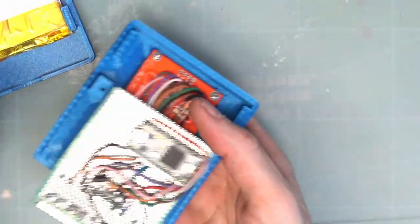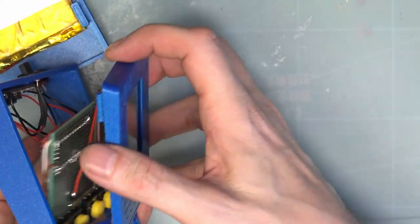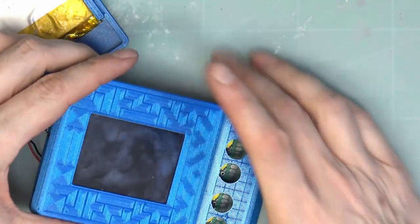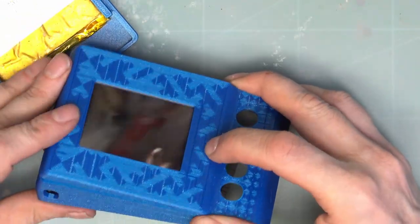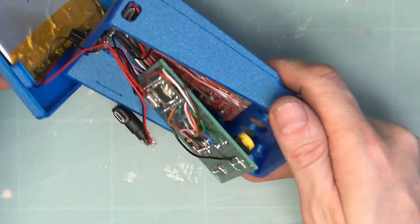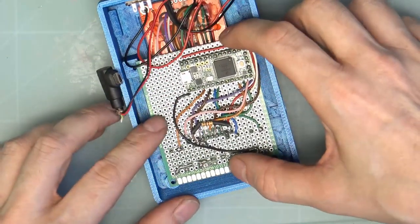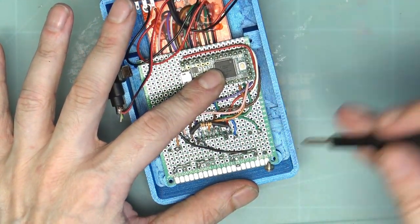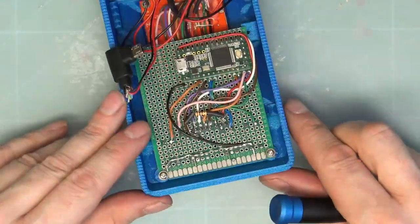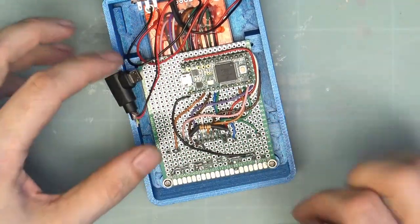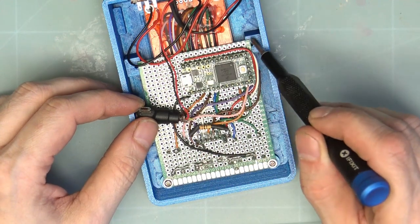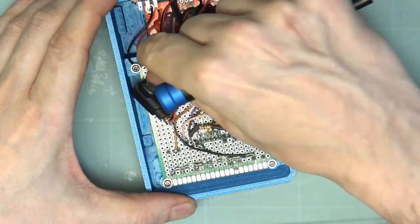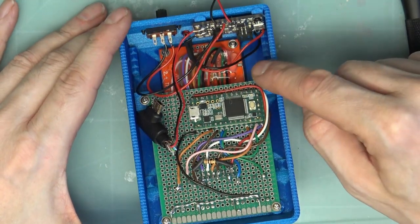Now we can slide that through there. We lock that underneath the top, clip the top section in. Then that is held in with some more of those screws. Let's just line this up because there's two screw holes just to hold that top bit down at the back. So that's everything locked in place.